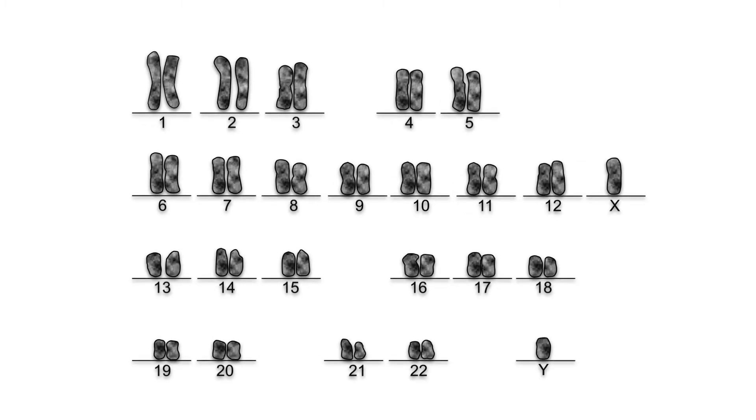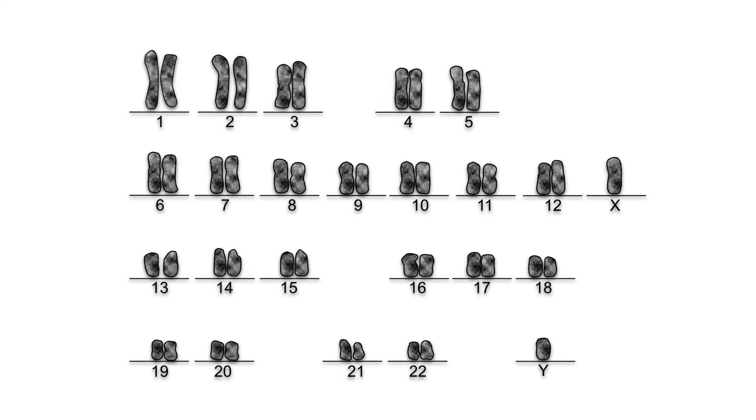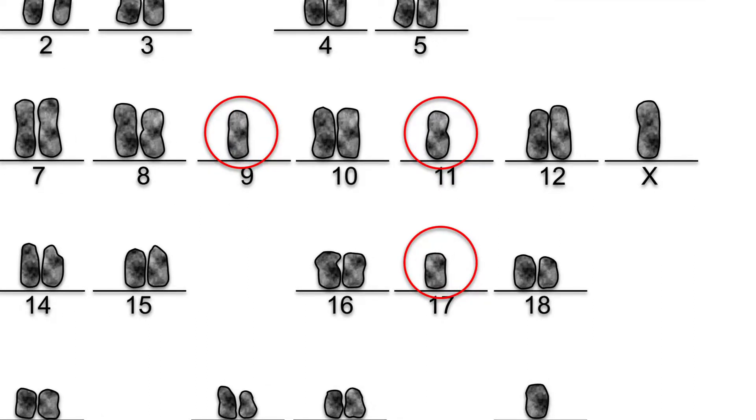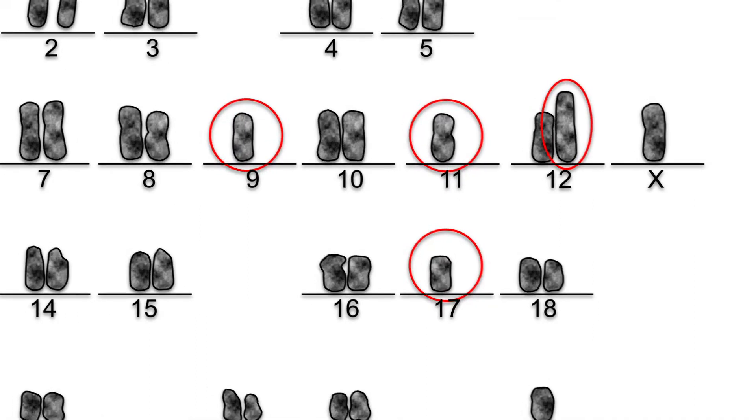The cells of many tumors show abnormal chromosomes. Frequent chromosomal abnormalities include alterations in number, size, and structure.